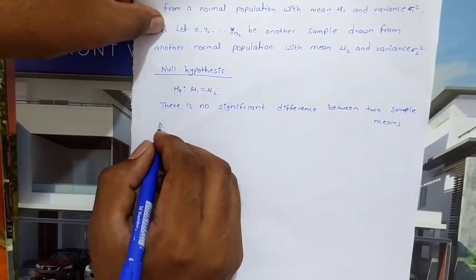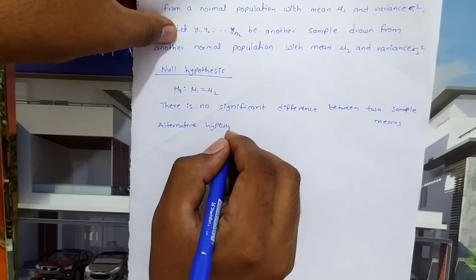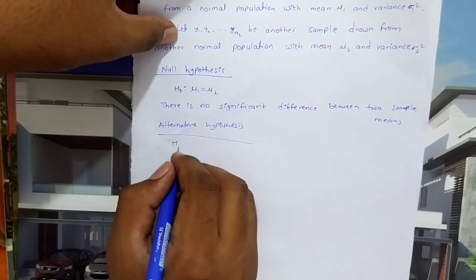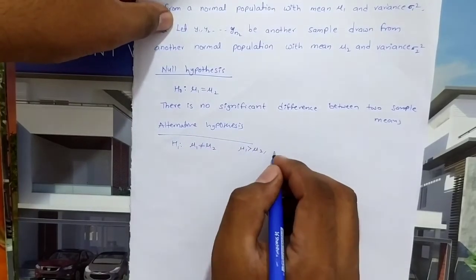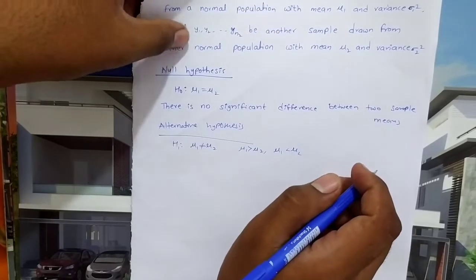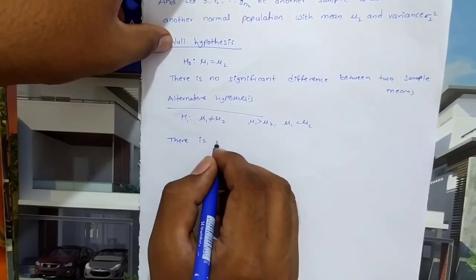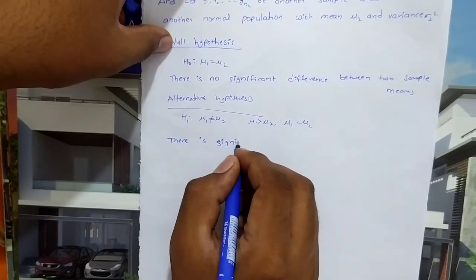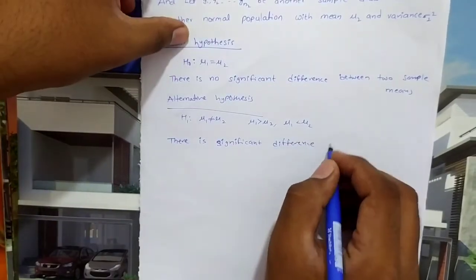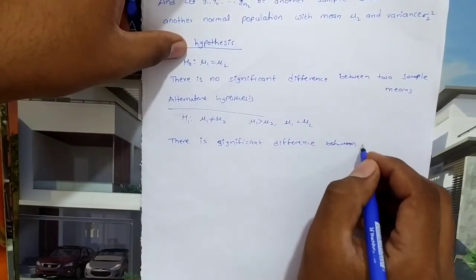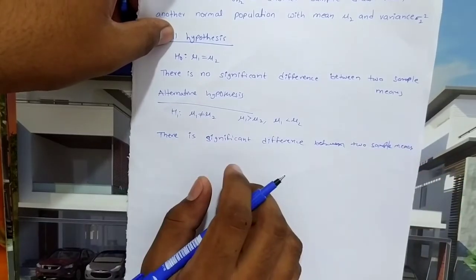Alternative hypothesis: mu1 not equal to mu2, or mu1 greater than mu2, or mu1 less than mu2. This states there is a significant difference between the 2 sample means.